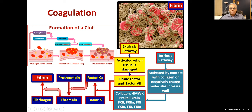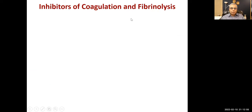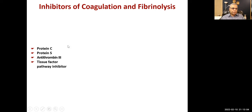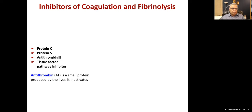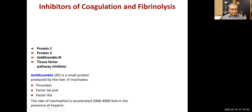We are studying anticoagulant drugs and will use this coagulation pathway as our main schematic for identifying drug mechanisms of action. Natural inhibitors of coagulation include protein C, protein S, and antithrombin. Tissue factor pathway inhibitor and antithrombin — a small protein produced by the liver — inactivate thrombin, factor Xa, and factor IXa. Main action is on thrombin and factor Xa.